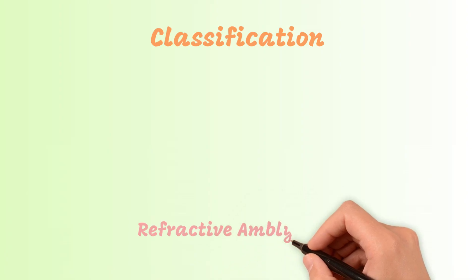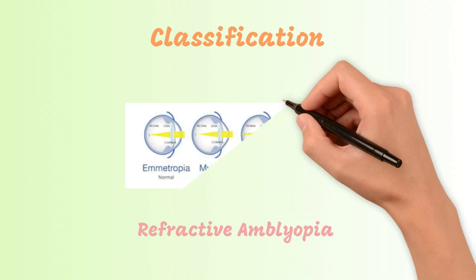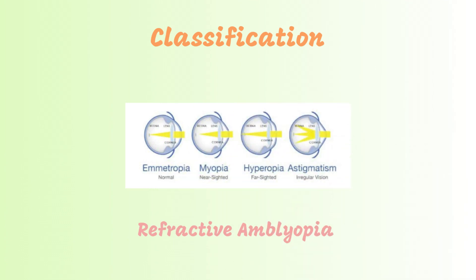Refractive amblyopia: dissimilar refractive errors in the two eyes cause one retinal image to be chronically defocused. Unilateral amblyopia is associated with anisometropia in 46% to 79% of cases.